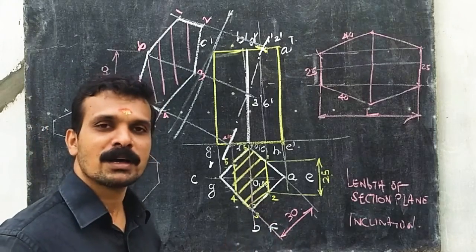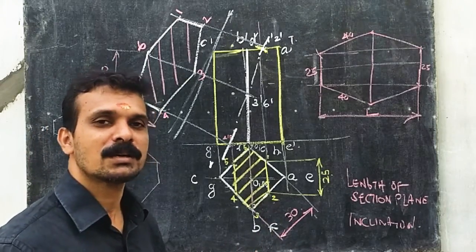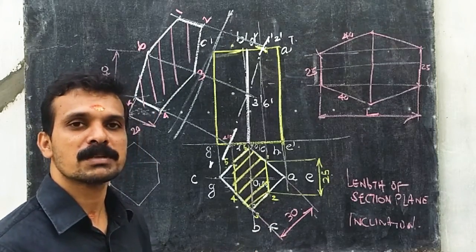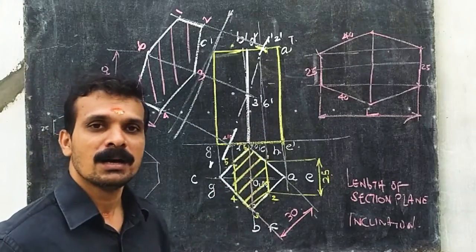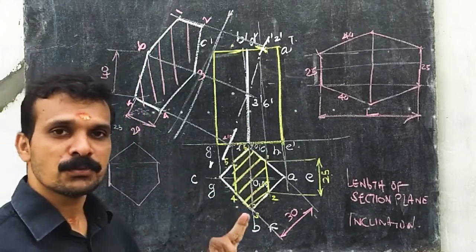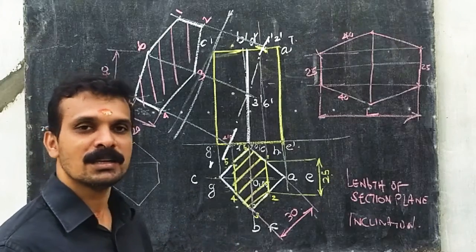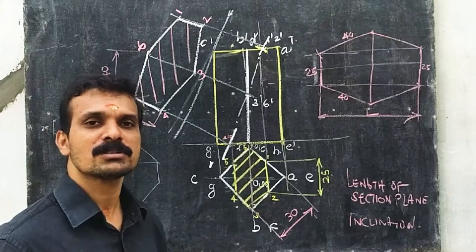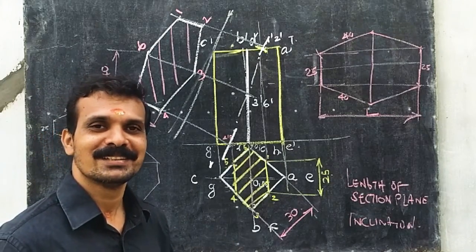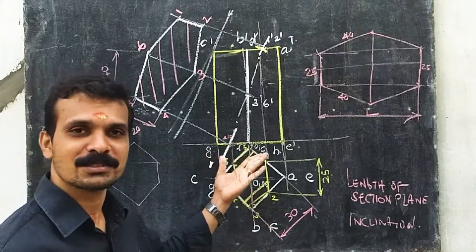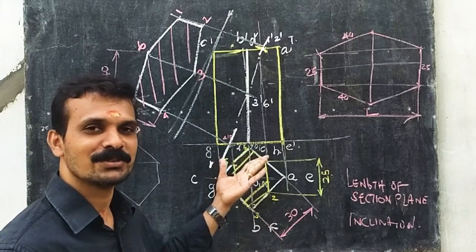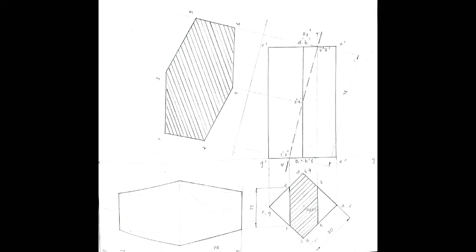This is one of the most difficult problems where the true shape is given. If you are able to understand this question, then all similar questions can be done very easily. I hope all of you have understood this question. Thank you.